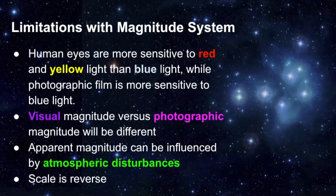Apparent magnitude can also be influenced by atmospheric disturbances. You can see this if you look at stars right along the horizon — you'll notice a twinkling effect, which is really the gases moving in the air causing that. It's usually more pronounced along the horizon. Also, the scale being in reverse can make things confusing.